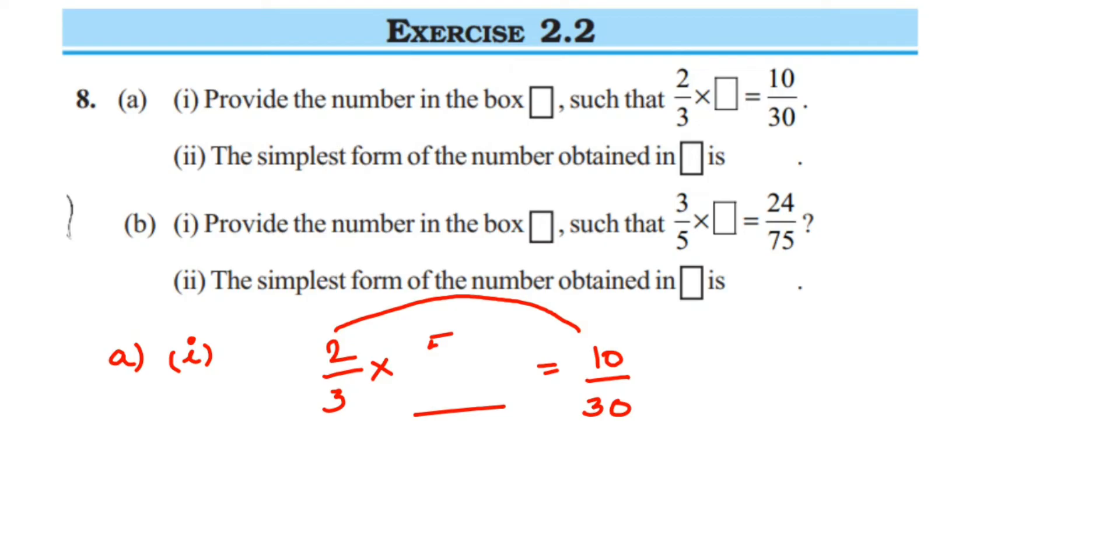Similarly, this 3 became 30, so with 3 what should you multiply to get 30? It is 10, right? Three tens are 30, so we'll get 10 here. So the number is 5 upon 10. This is a simple question, this is how we can check the answer.